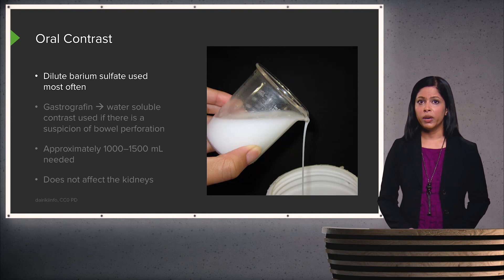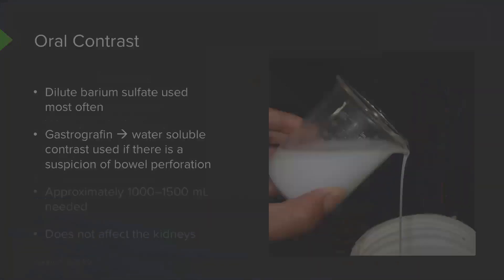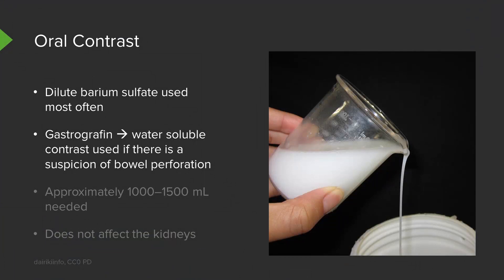Oral contrast is dilute barium sulfate, which is most commonly used. However, gastrografin, a water-soluble contrast, can also be used if there is suspicion of bowel perforation — because if gastrografin penetrates into the peritoneum it can be absorbed, whereas dilute barium sulfate cannot. We use approximately 1,000 to 1,500 milliliters of oral contrast, administered about one and a half to two hours prior to CT scanning. Oral contrast is not absorbed and does not affect the kidneys, so it is safe to administer even in patients with a contrast allergy.